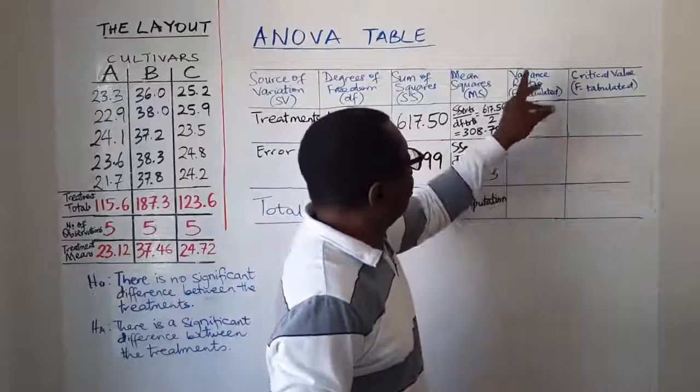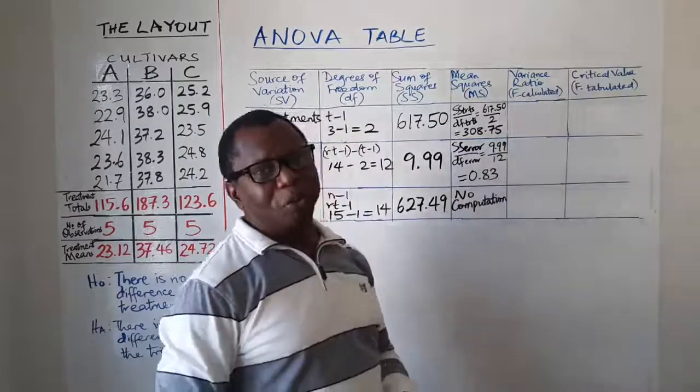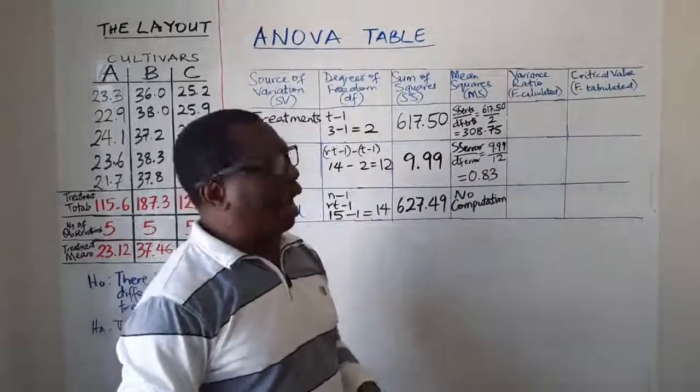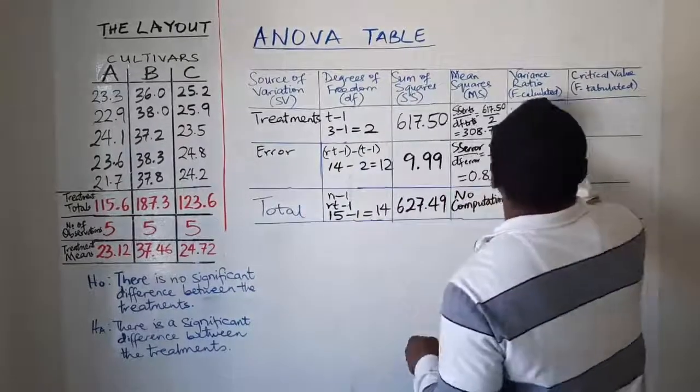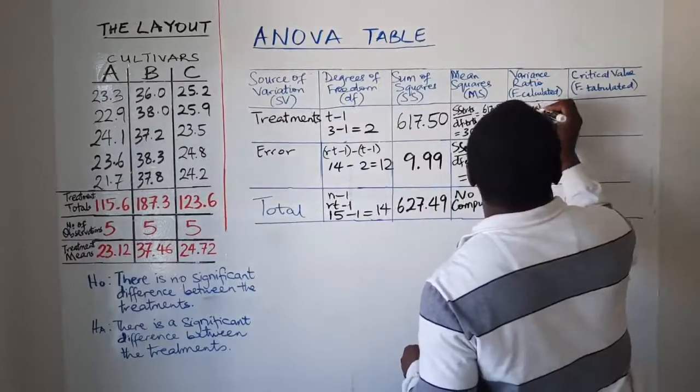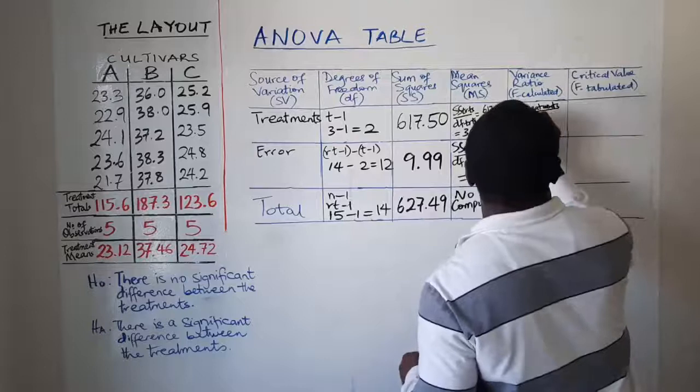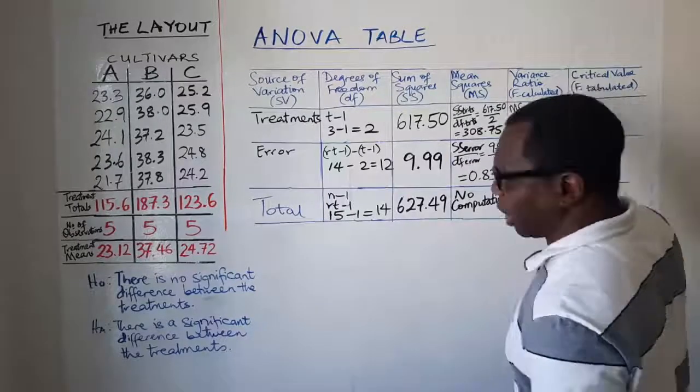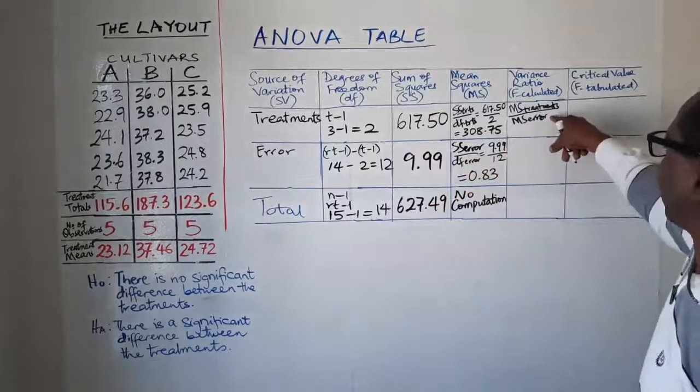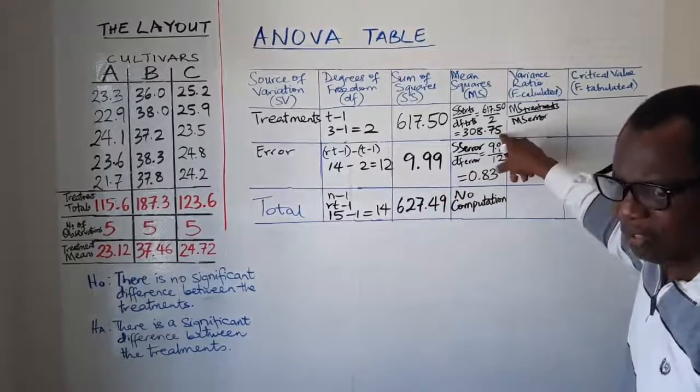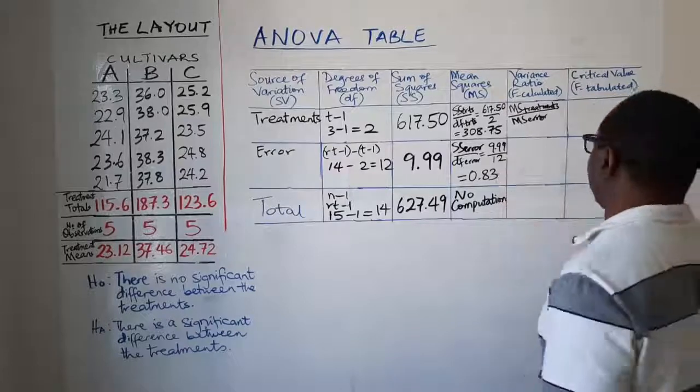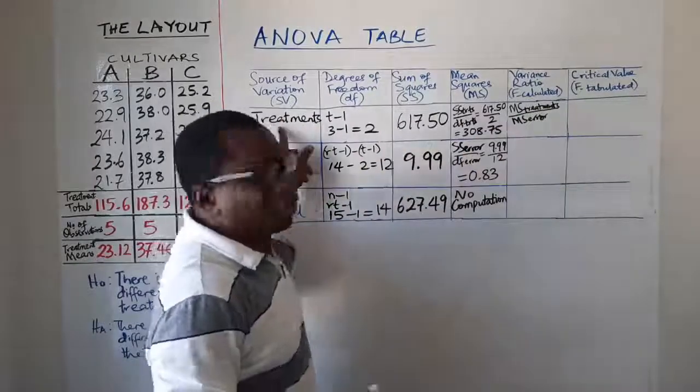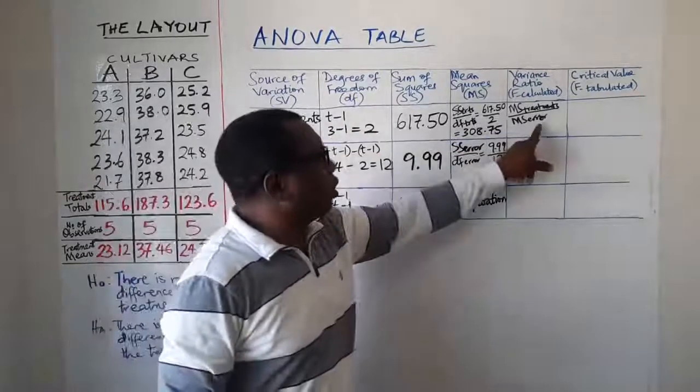So your next item in that table is this column called variance ratio. Variance ratio refers to your F calculated. That's the way we abbreviate it. F calculated. And this is simply obtained as our mean square for treatments divided by our mean square for error. That means this value 308.75 will be divided by 0.83.